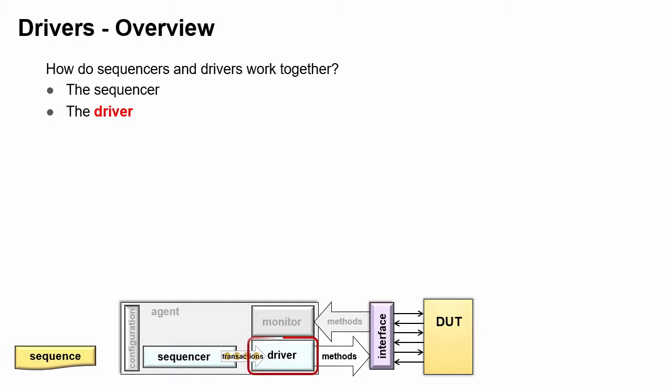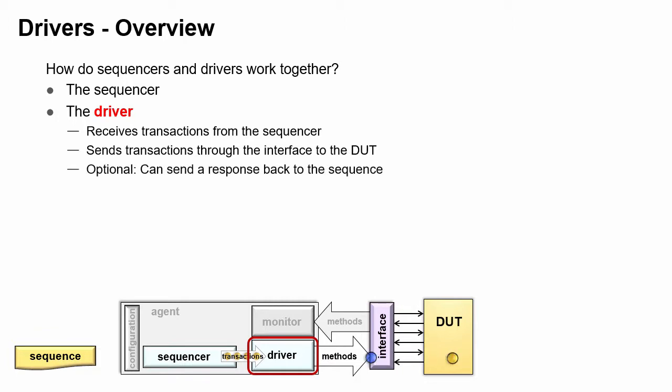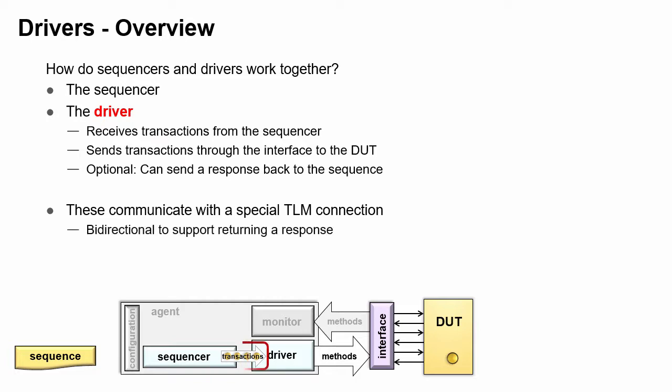The driver receives sequence items from the sequencer and calls methods in the interface to send them along to the DUT. Optionally, a driver can get the response from the DUT and send it back to the sequence. The sequencer and driver communicate with a special version of a TLM blocking connection. The connection is bidirectional, so the sequence is able to send a request to the driver, and the driver optionally sends a response back. In this course, it is drawn with a unidirectional arrow for simplicity.